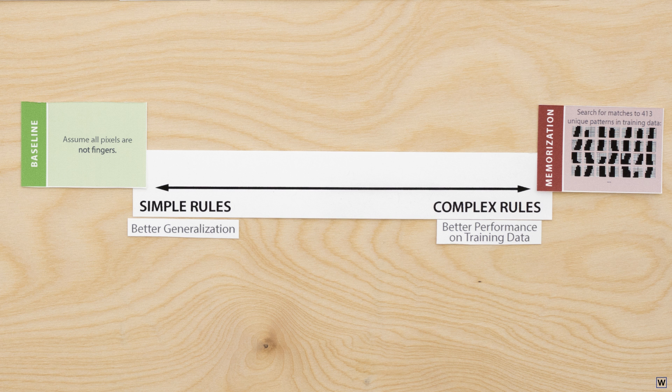Since good machine learning algorithms must both perform well in our training set and generalize, they must exist between these two extremes. If we want to find an algorithm that will actually learn, this is where we should look.